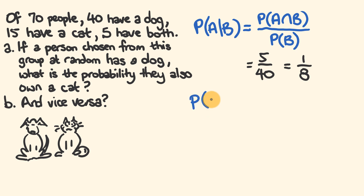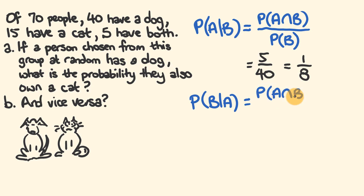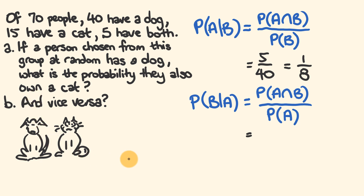What about the vice versa — the probability of B given A? This equals the probability of A and B over the probability of A. We're looking for the probability that if they own a cat, what's the probability they also own a dog? The probability of both A and B is 5 — five have both. The probability of A: how many have a cat? There are 15. So it's 5 out of 15, which reduces down to one third.